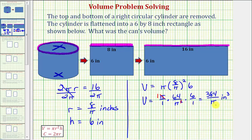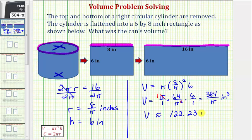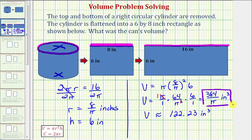This is the exact volume of the right circular cylinder. For a decimal approximation, 384 divided by pi gives us approximately 122.23 cubic inches. So we have an exact volume of 384 divided by pi cubic inches, and a decimal approximation of approximately 122.23 cubic inches.